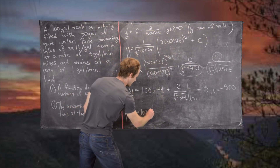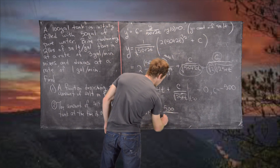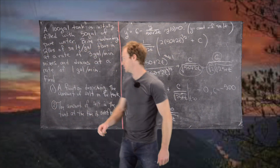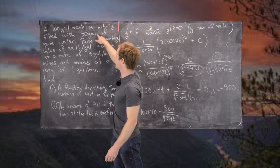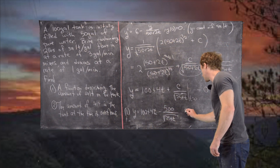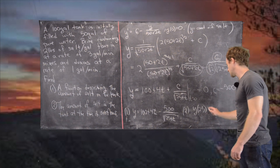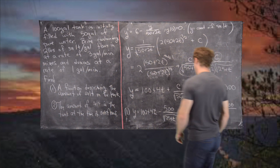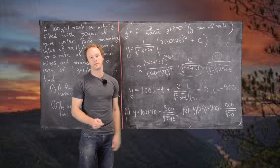The answer to question one is y = 100 + 4t − 500/√(25 + t). For question two, we need the amount of salt when the tank overflows. We started with 50 gallons and gain 2 net gallons per minute up to 100 gallons, so overflow occurs at t = 25 minutes. Evaluating y(25) gives 100 + 100 − 500/√50, which equals 200 − 500/√50, and that is the final answer.